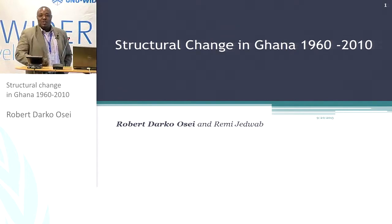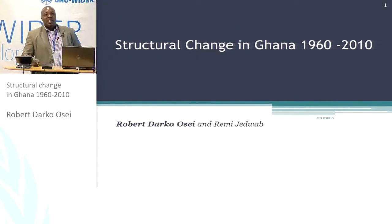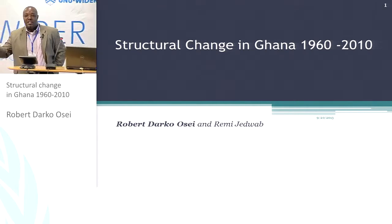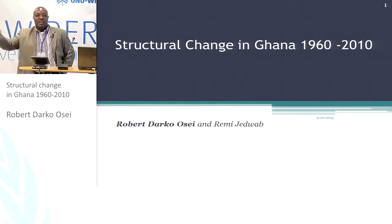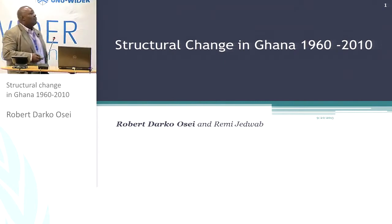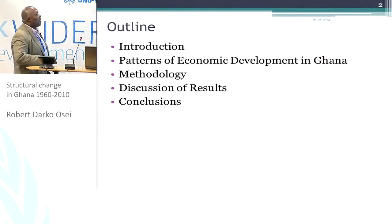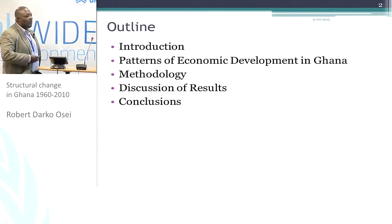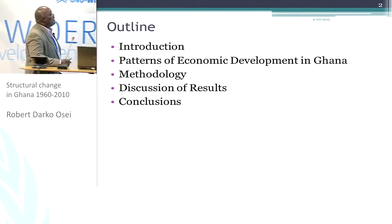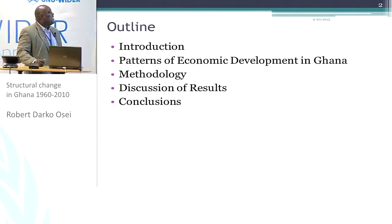Lewis actually suggested that in terms of the sequencing, Ghana should have focused more on the agricultural sector rather than the industrialization push that it actually pursued at the time. So Ghana is always an interesting case.